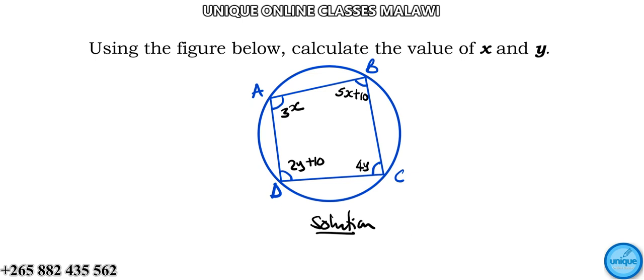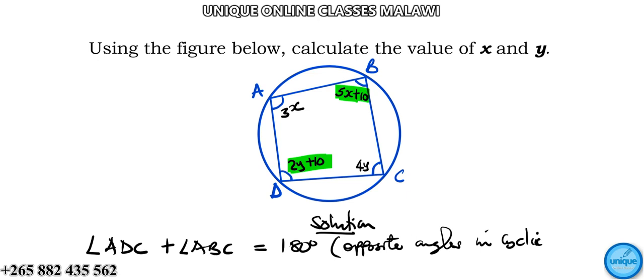We're going to apply a circle theorem. The opposite angles of a cyclic quadrilateral sum to 180 degrees. So angle ADC plus angle ABC is equal to 180. This is because of the opposite angles in a cyclic quadrilateral theorem.